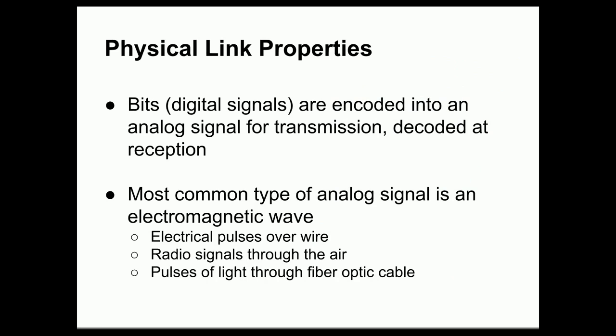Regardless of the type of physical link, all physical links must take bits — the digital messages we want to send — and encode them into some kind of analog signal to be transmitted over the link, then decode that signal at the other end to recover the original bit stream. The most common type of analog signal used for this purpose is an electromagnetic wave, which typically travels at or near the speed of light, making it very fast.